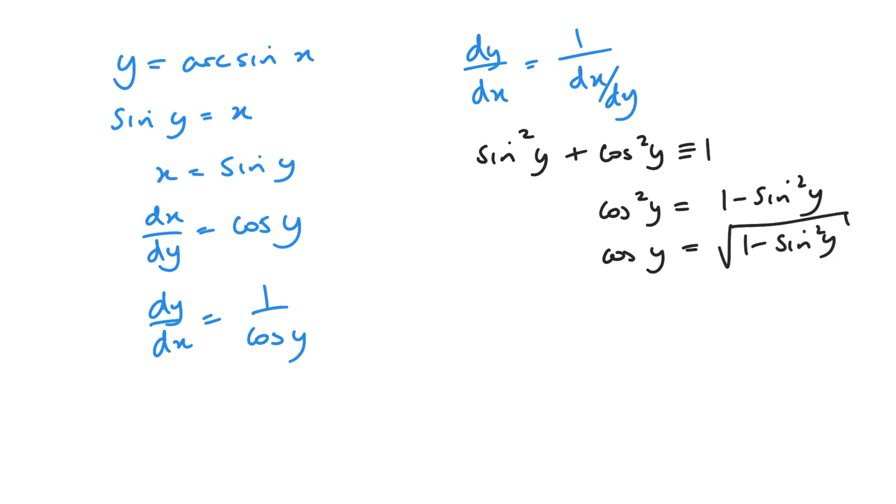Now if I go back to my original here, I can see and I'll highlight this one for you that sine y is just x. So cos y is the same as the square root of 1 minus x squared. And then I can substitute that back in to my dy by dx. So dy by dx is 1 over the square root of 1 minus x squared. And this is very useful.